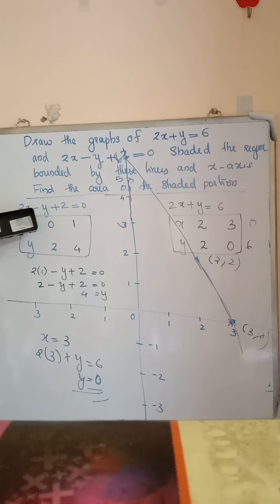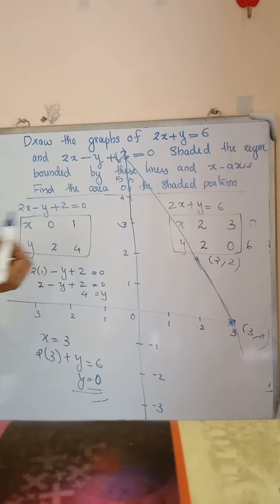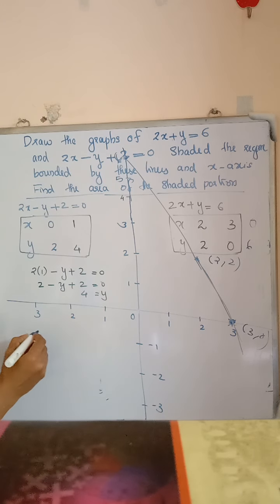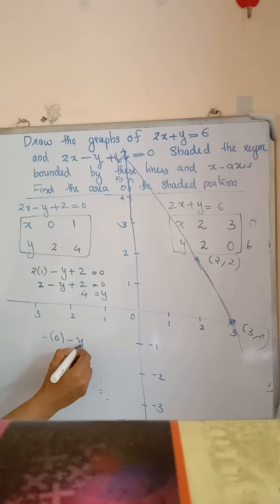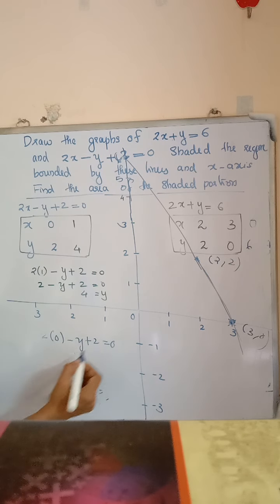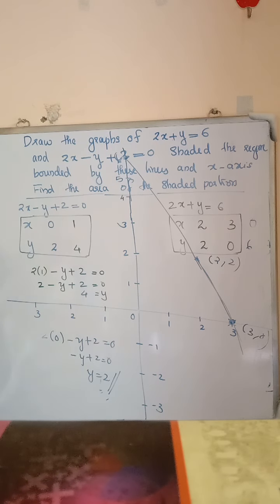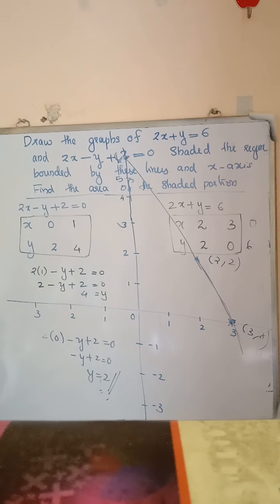Now, what about 2x minus y plus 2 is equal to 0? When x is equal to 0, we get 2 into 0 minus y plus 2 is equal to 0, so y is equal to 2. When x is equal to 1, we get y is equal to 4. So we get the two points: (0, 2) and (1, 4).